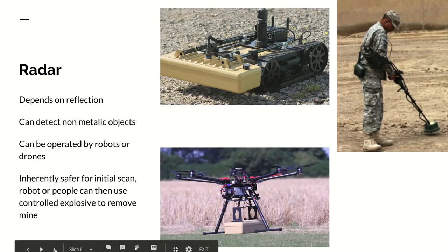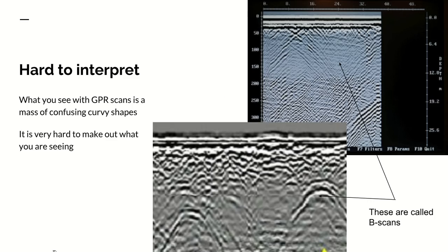So radar techniques would be preferred but they're very hard to interpret. If you just use an ordinary ground penetrating radar and run it along the ground you get really weird pictures with lots of curves and apparently lots of layers. It's very hard to make out what you're seeing.